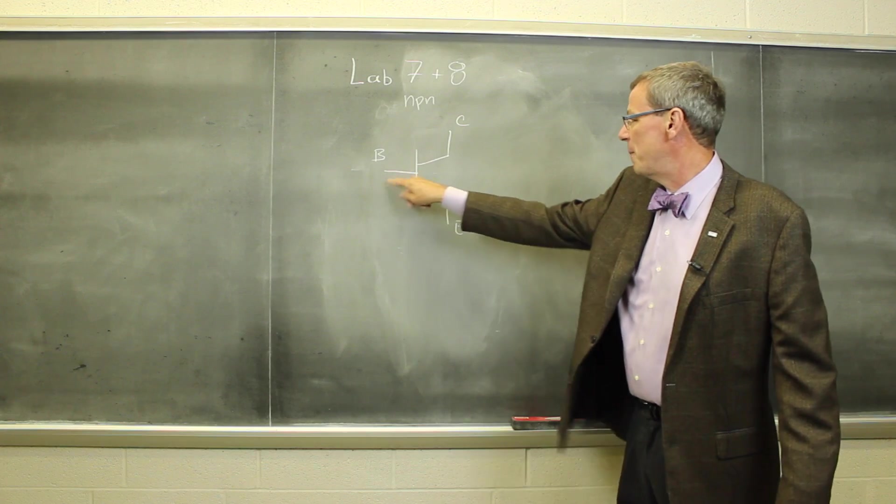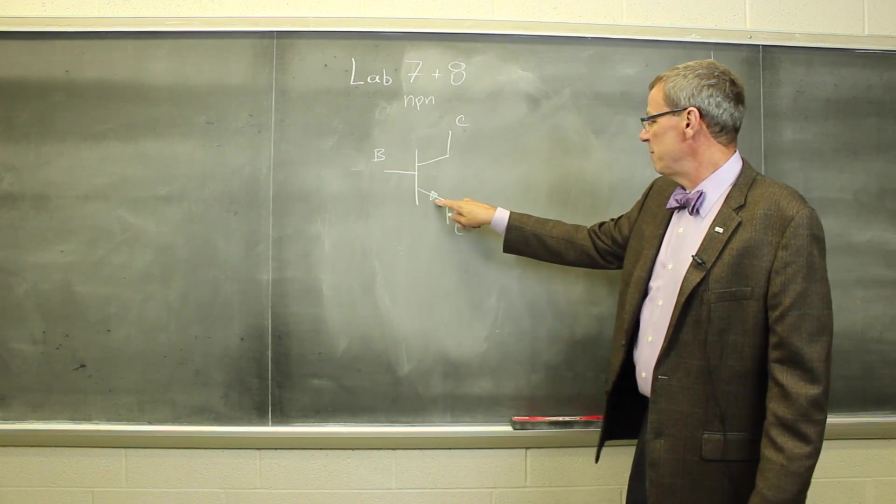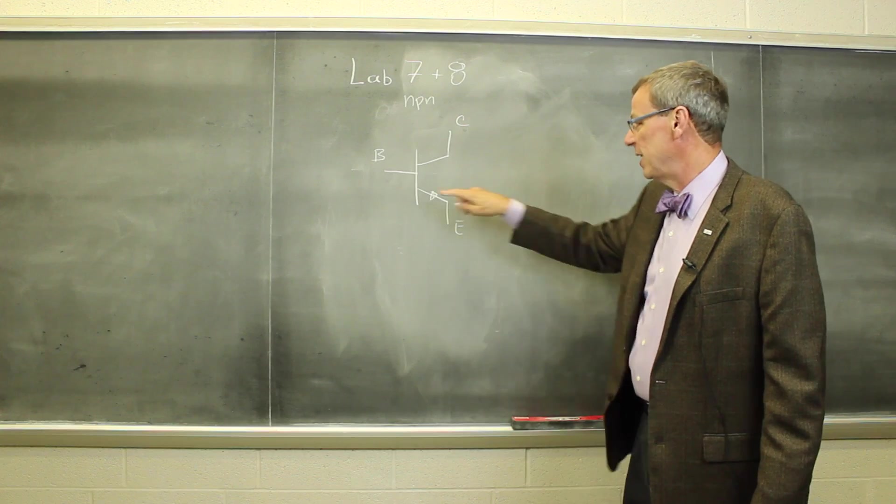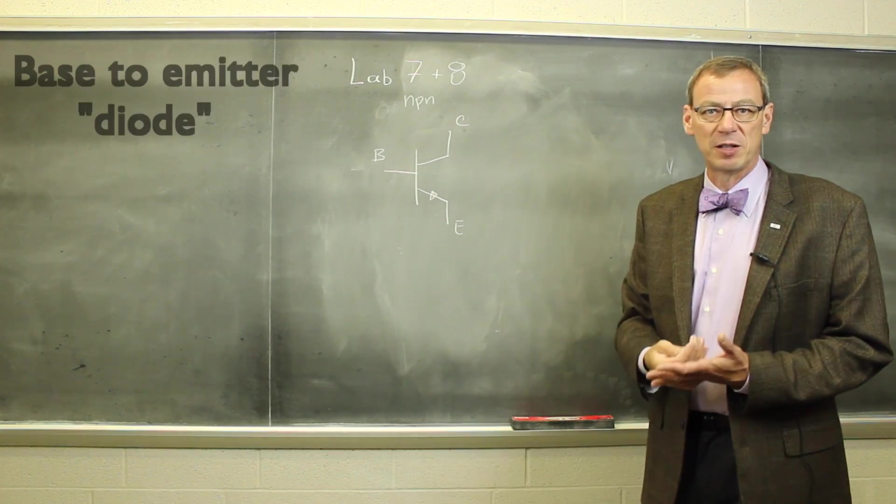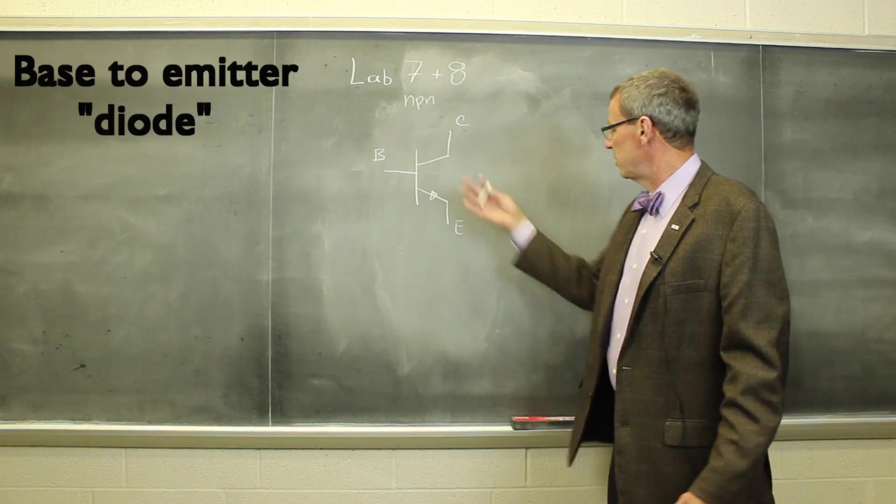There are three inputs: a base, a collector, and an emitter. And the emitter has a little triangle symbol that indicates that from the base to the emitter the circuit looks like a diode. So that's the transistor.